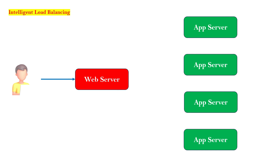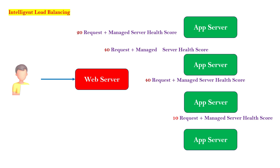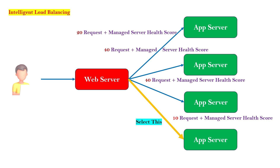Coming back to the architecture example — you have a web server and four application servers in the backend. A user trying to access the application reaches the web server, and the web server decides which server is under the least load to divert the request. For example, app server 1 has 20 requests, app server 2 has 40, app server 3 has 40, and app server 4 has 10 requests currently being served. Based on the health score and request counts, the fourth application server — serving only 10 requests — will receive the new request. This is the weighted least connection algorithm.